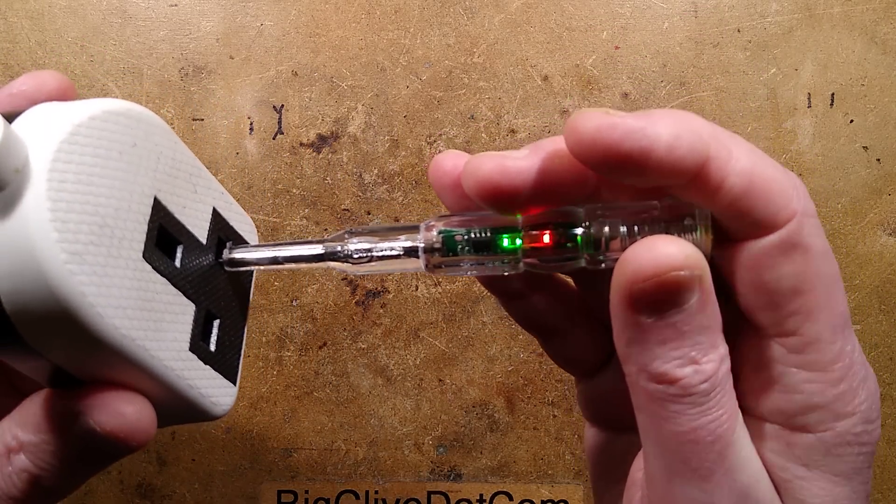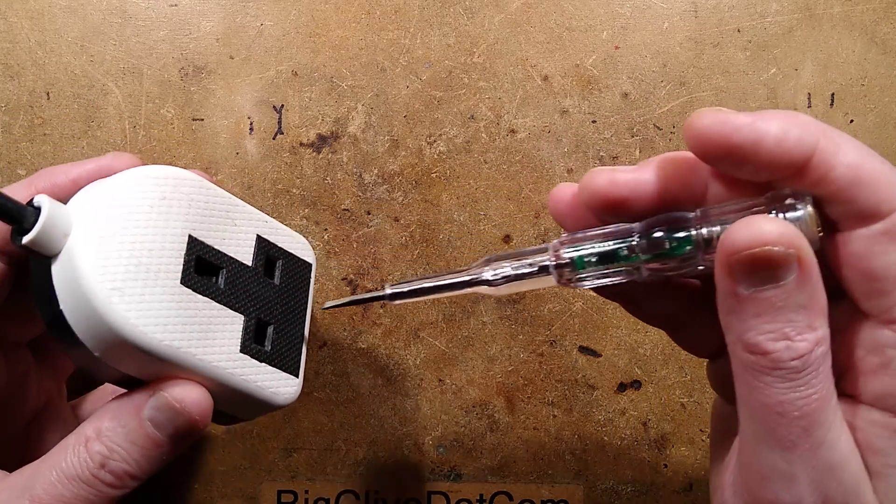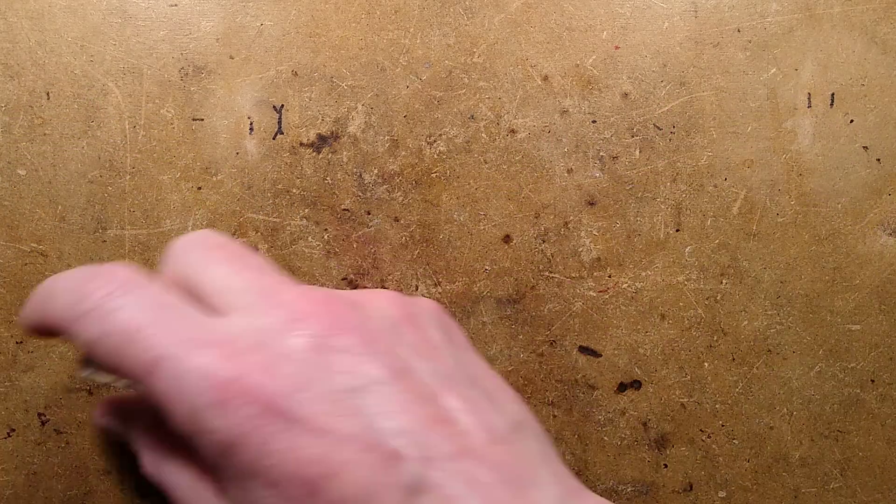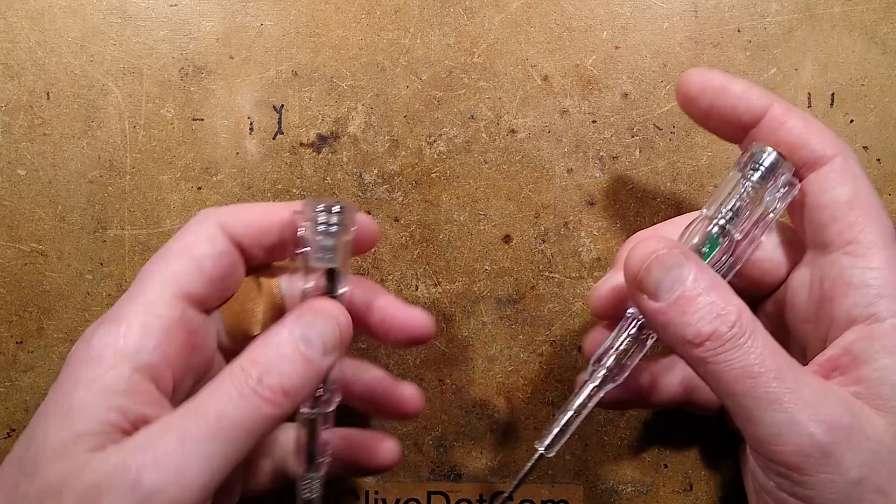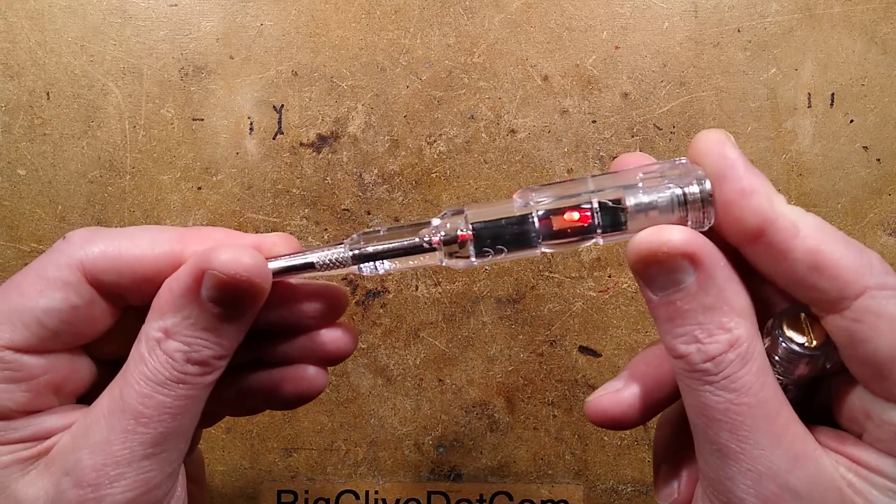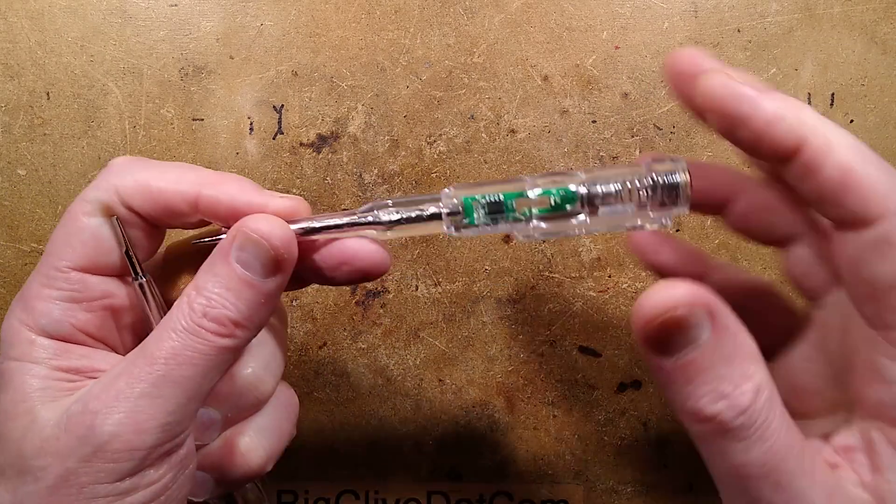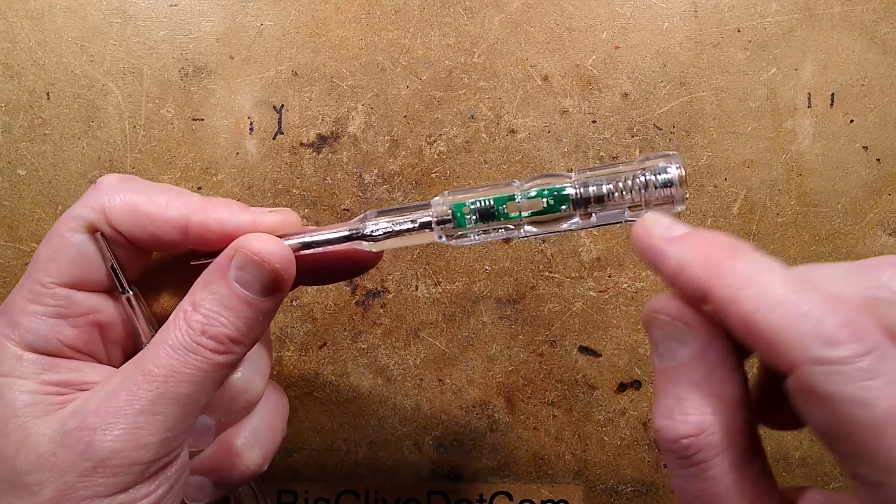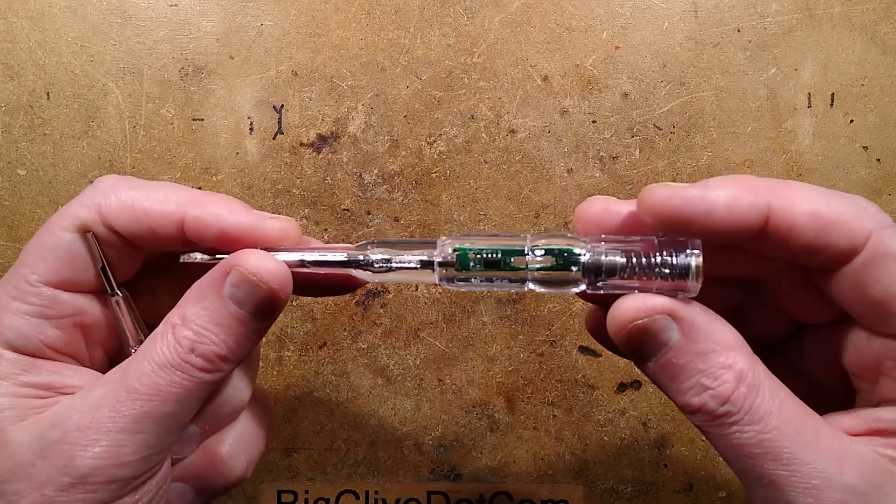So it gives you an idea of not just continuity. Because if you go into an earth or neutral, it's effectively your reference to ground. So that will just light continually. Much like when you're bridging it out. But the fact that it can detect that and it lights the two LEDs is quite interesting.